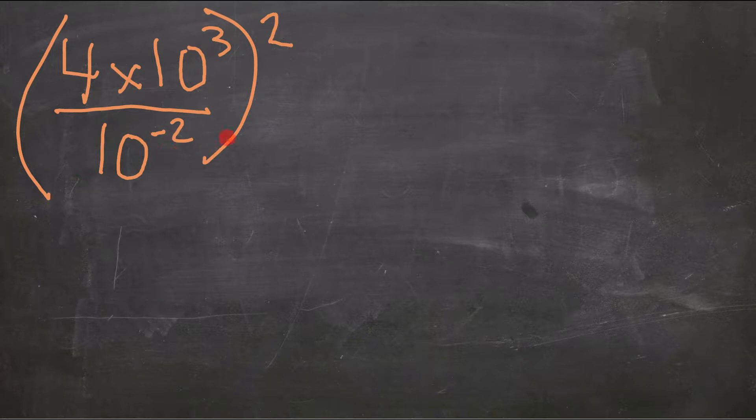So I'm going to start with this negative exponent here. We've got 10 to the power of negative 2. Remember that if we move that exponent or that whole entire power to the numerator, we're going to change the sign.